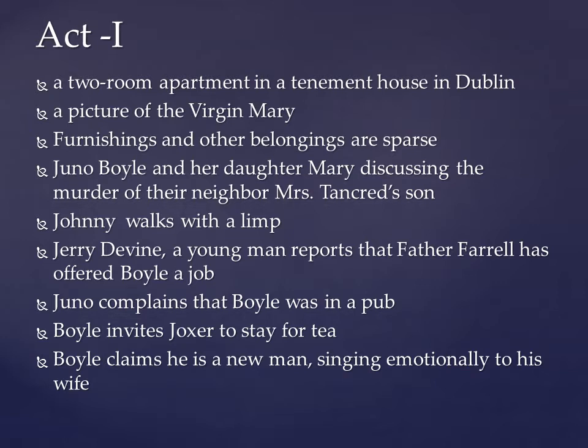Juno and the Peacock was first staged in 1924. It was first staged at the Abbey Theatre in Dublin. It is set in the working-class tenements of Dublin in the early 1920s during the Irish Civil War period. Let's understand the play act-wise.